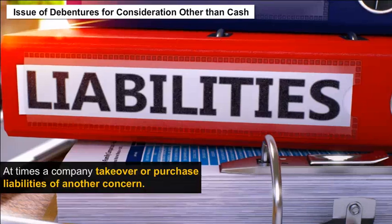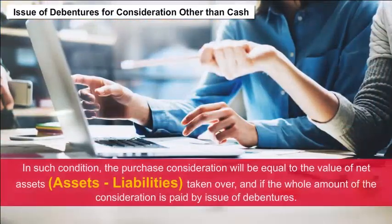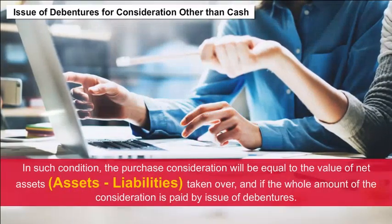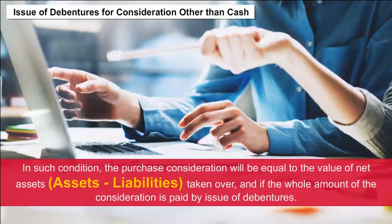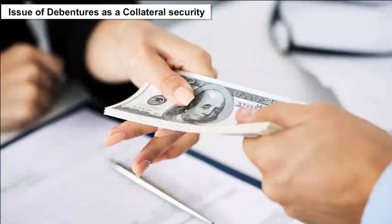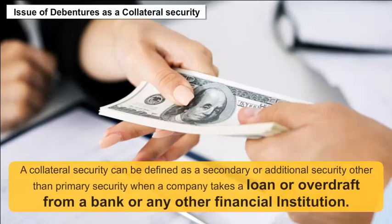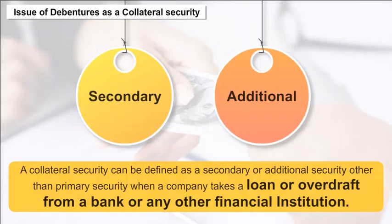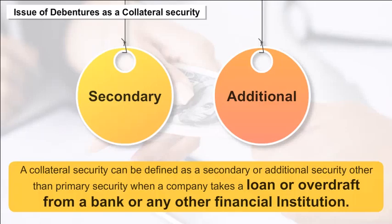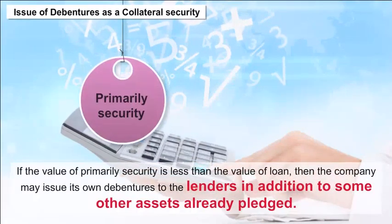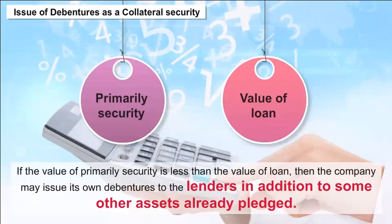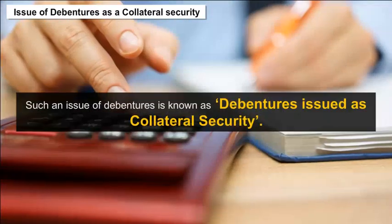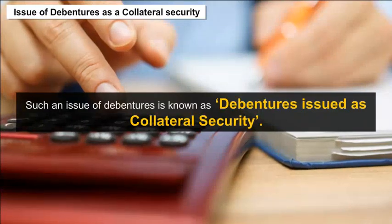At times, a company takes over or purchases the liabilities of another concern. In such a condition, the purchase consideration will equal the value of net assets taken over, and if the entire consideration is paid by issue of debentures, the journal entry is recorded accordingly. Issue of Debentures as Collateral Security: A collateral security is a secondary or additional security, other than primary security, when a company takes a loan or overdraft from a bank or financial institution. If the primary security is less than the value of the loan, the company may issue its own debentures to the lenders; this is known as debentures issued as collateral security.